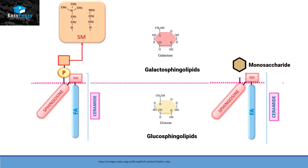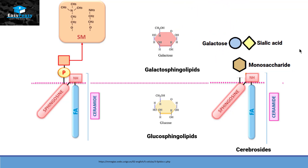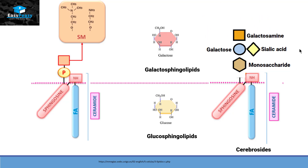A glycolipid with one monosaccharide can come under the category of cerebrosides. If more monosaccharides attach — for example, galactose with sialic acid attaches to glucosamine, and this glucosamine attaches to another glucosamine to form an oligosaccharide — then the compound is called a ganglioside.